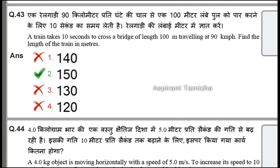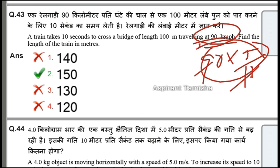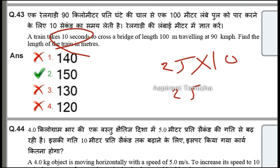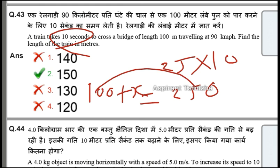The train takes 10 seconds to cross a bridge of length 100 metres, travelling at 90 km per hour. Find the length of the train in metres. 90 km/h equals metres per second: 90 into 5 by 18 equals 25 metres per second. Speed equals distance by time — the basic formula. Speed is 25 m/s, speed into time 10 seconds equals 250. So 250 equals 100 metres plus train length x, giving train length of 150 metres.